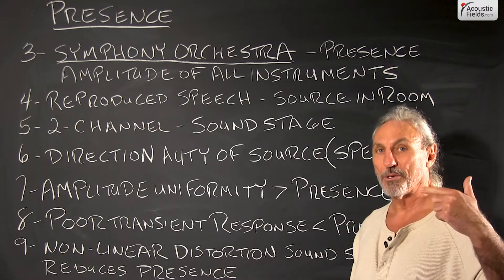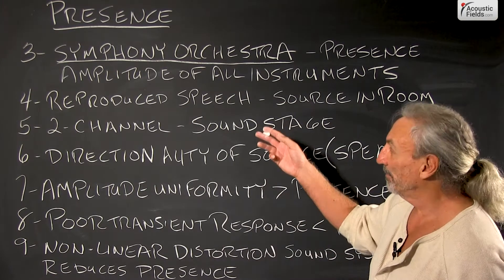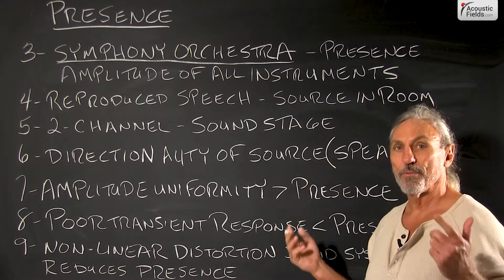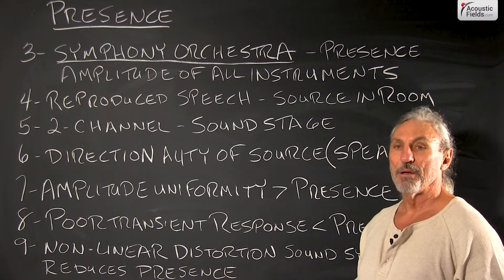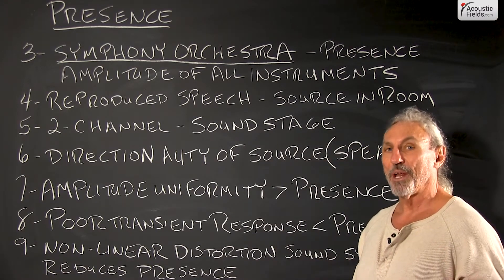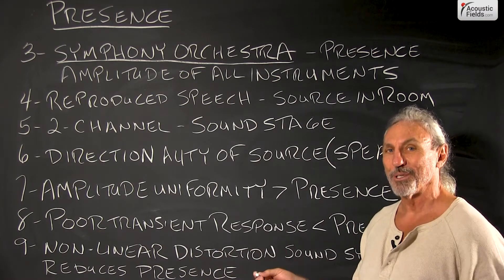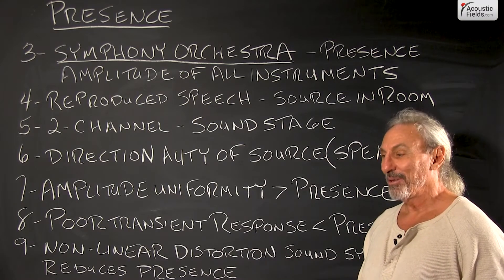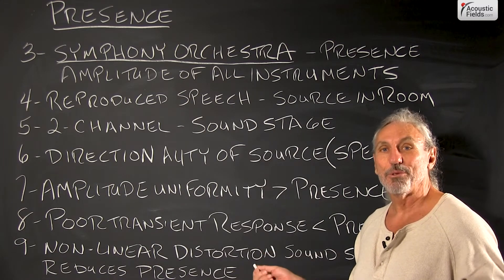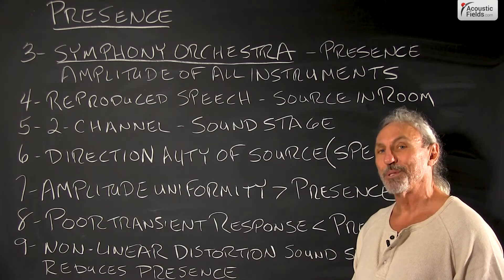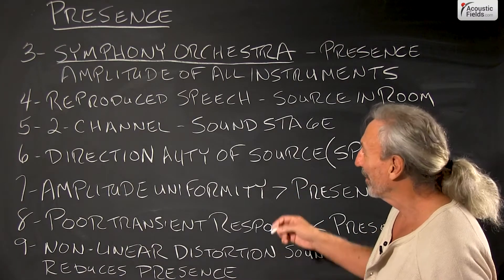We have the ability in our brains and hearing system to localize these kinds of differences. It's part of our spatial recognition system that we use for distance in rooms. We actually do a funny thing in our studio — we blindfold people and ask them to guess distance between walls that have diffusion and walls that don't. The differences range from 25% error to 200–400% error, showing how differently people's hearing systems respond.